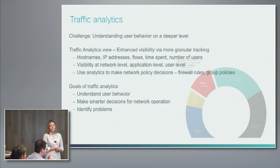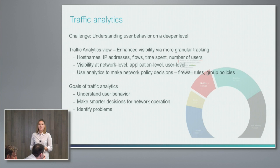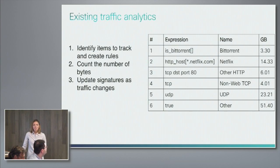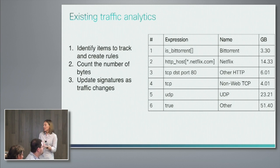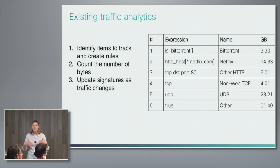You can make better decisions about traffic shaping rules that you apply, and also identify problems in the network. You can understand what a common day looks like in your network so you can easily see if there are situations that are out of the norm and understand outliers from the regular baseline. Our existing traffic analytics has been pretty simple — just a list of rules, easily made based on traffic we know is in the network. You count the number of bytes and update signatures as traffic rules change as new websites become more popular.